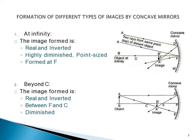In the second case, when we are keeping the object beyond C — we can see AB is the object — the image formed is real and inverted. It is formed between F and C, and if we talk about the size of the image, it is diminished.